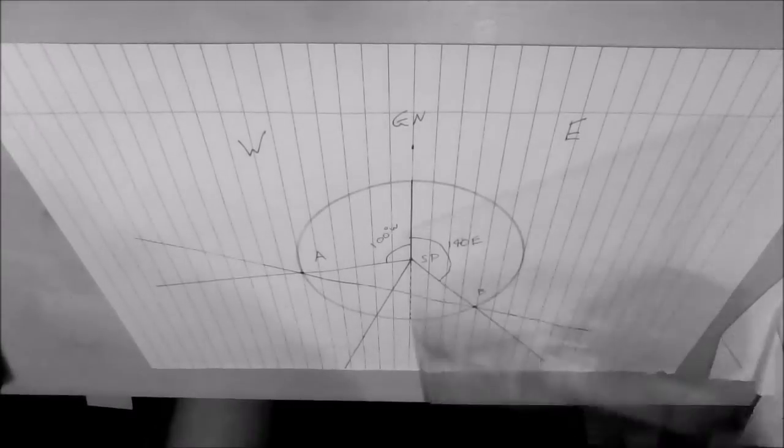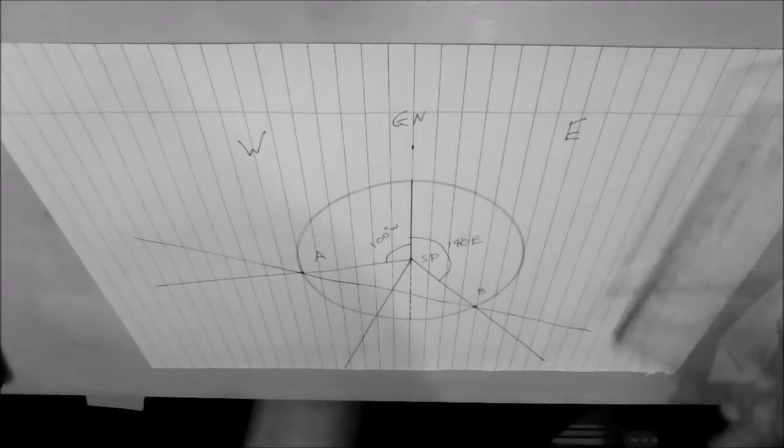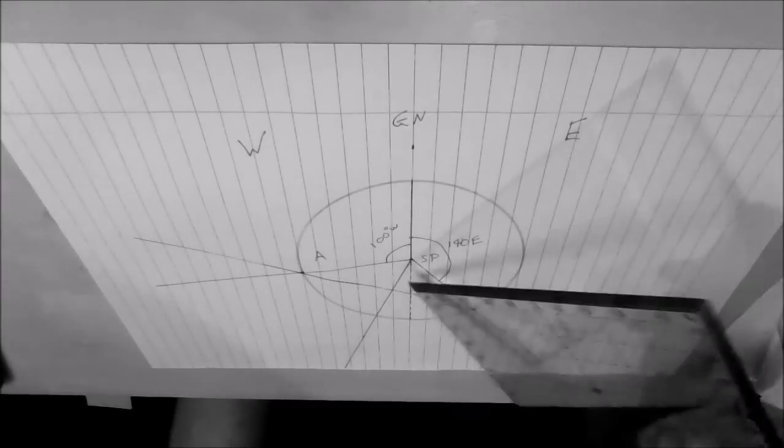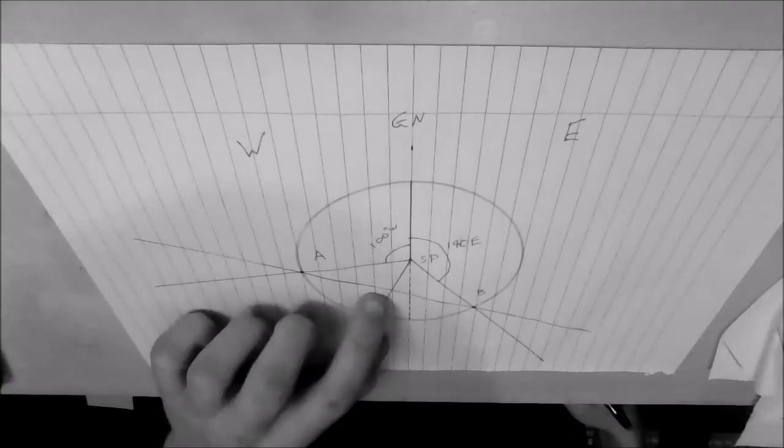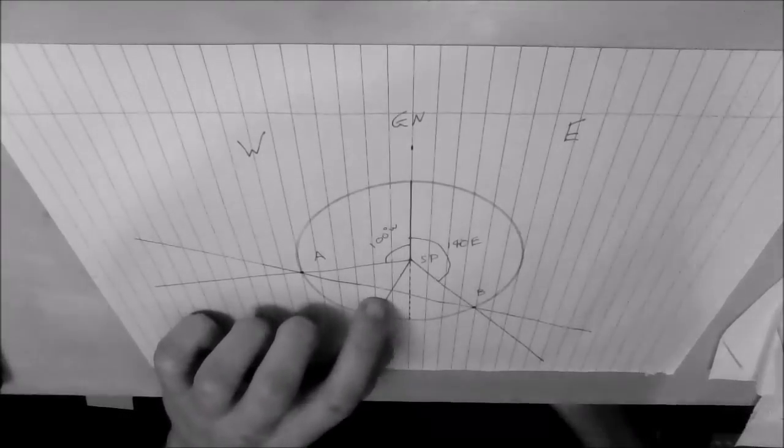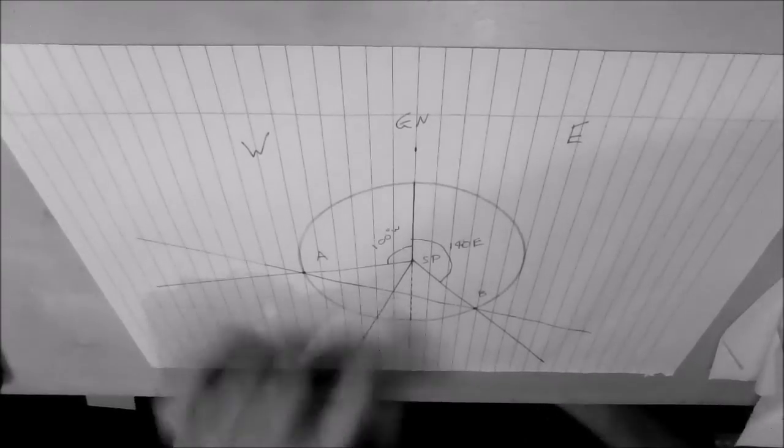OK, so we've got our 100 degrees west, 140 degrees east, and this line here represents the 160 degrees west, which is where it wants us to measure the angle and the grid track and the true track.